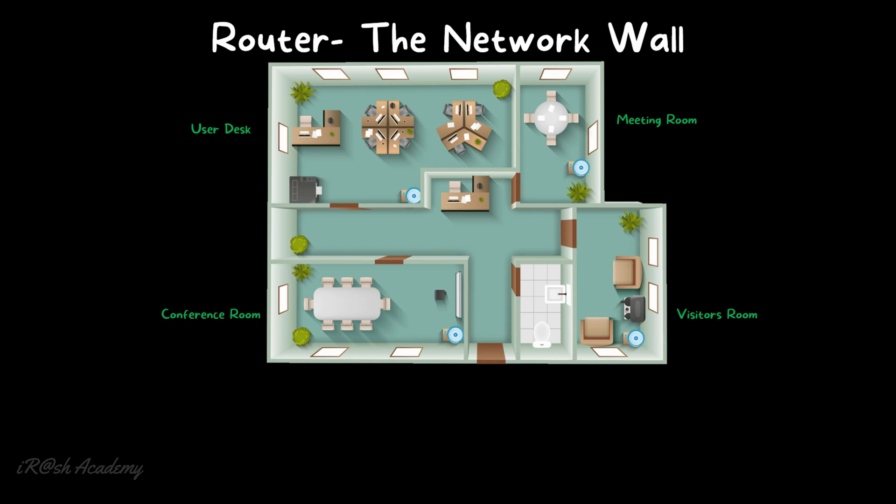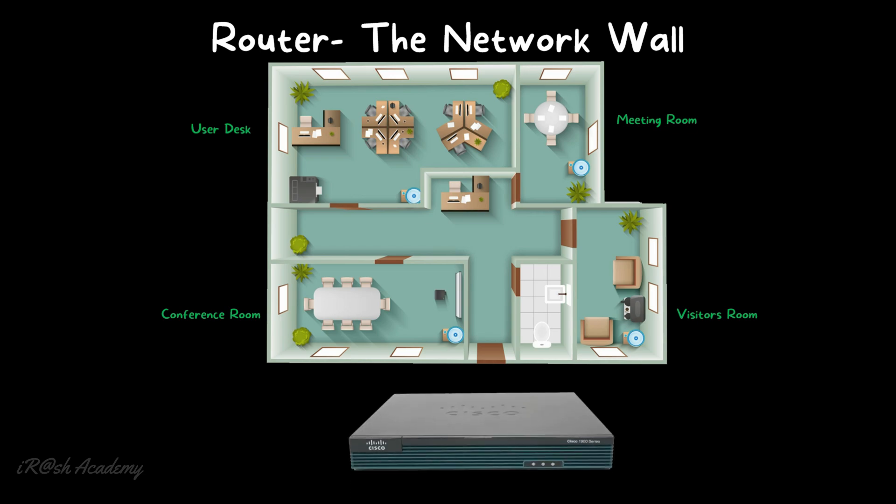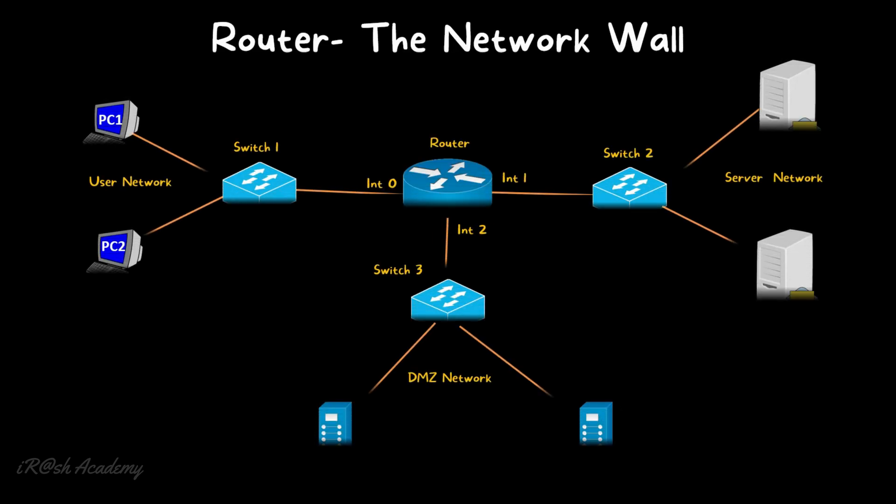The purpose of the wall is to separate the areas so they don't interfere with each other. For example, someone working at the user desk can work without disturbance from the conference room or meeting room. The same applies to all other areas. The router serves the same purpose — it acts as a wall between multiple networks, separating them and only allowing the required data between them.